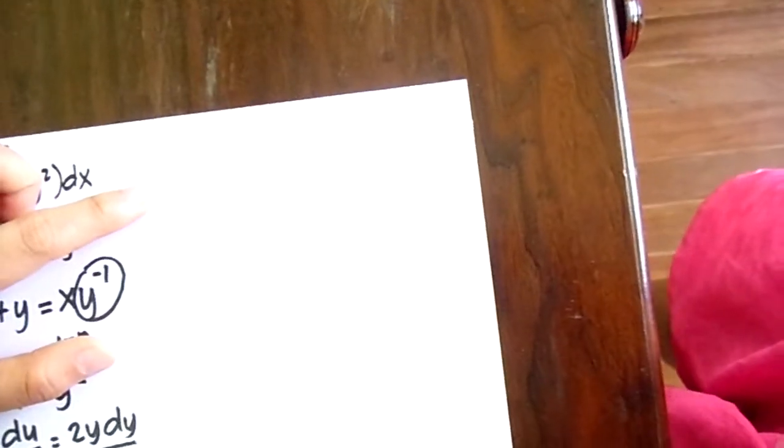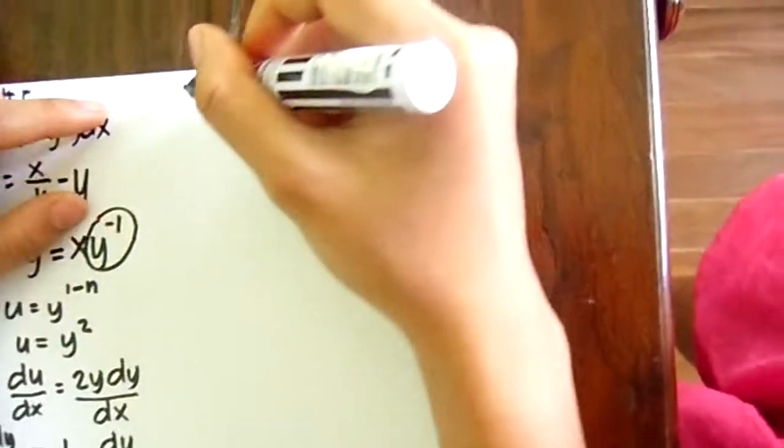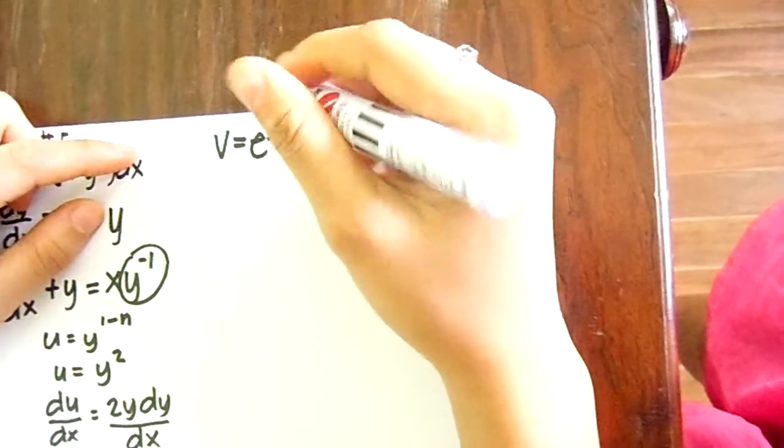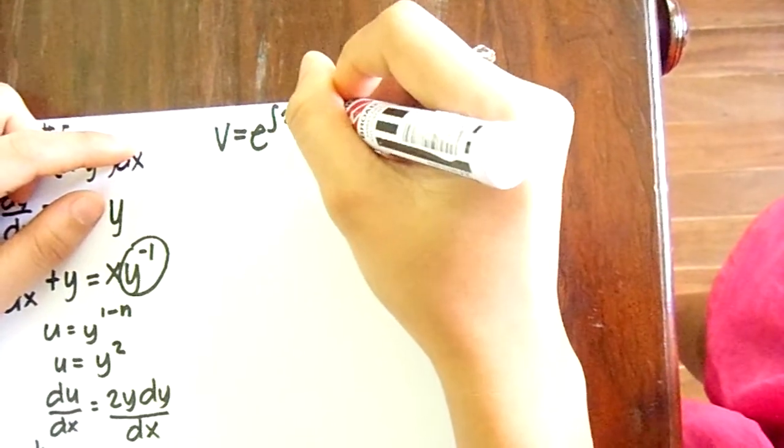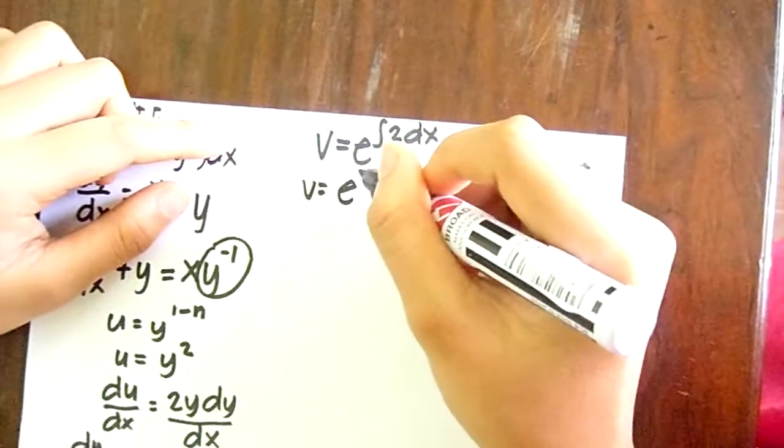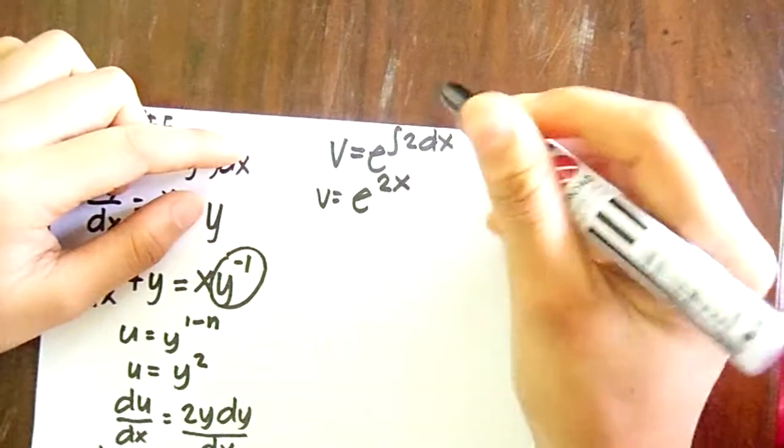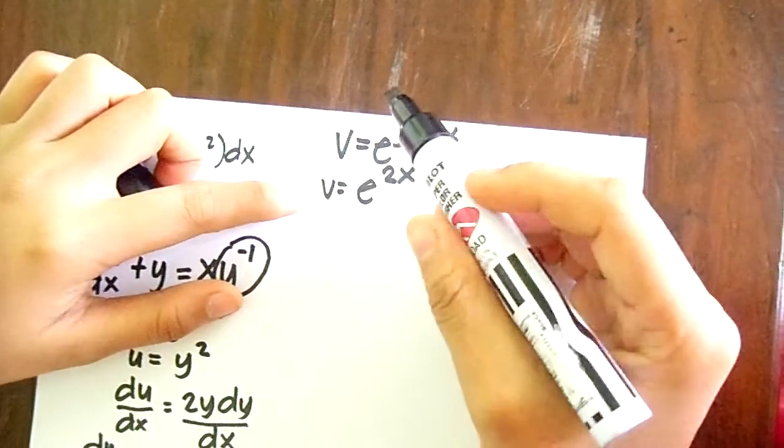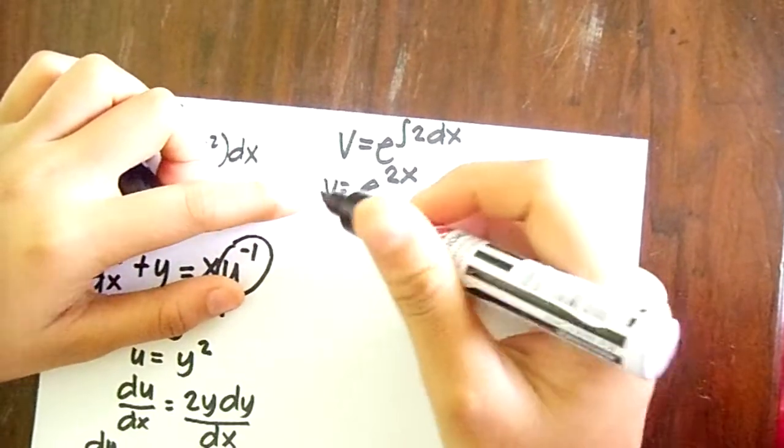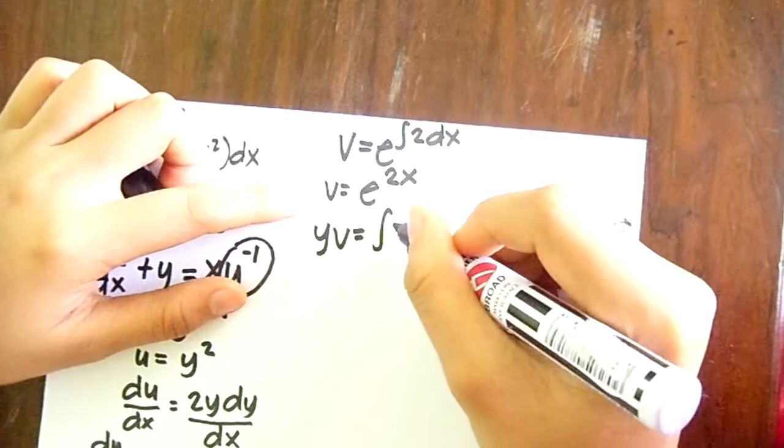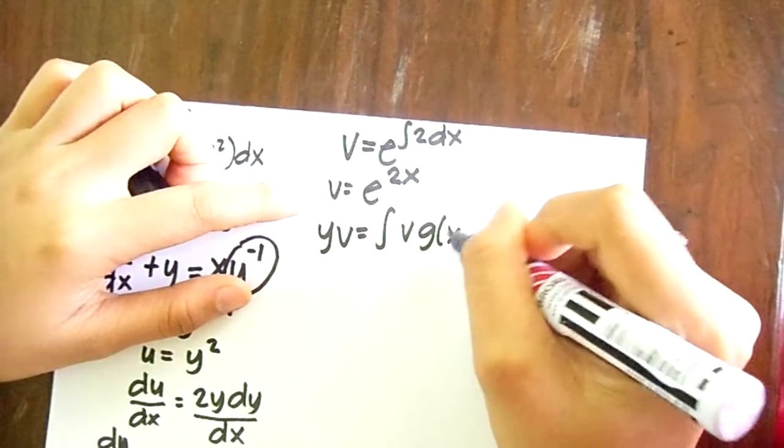Now, using this integrating factor, we have e to the integral of our p of x, which is 2, with respect to dx. Now, it becomes v equals e to the integral of 2dx. Now, this will be our integrating factor. So it becomes e to the 2x.